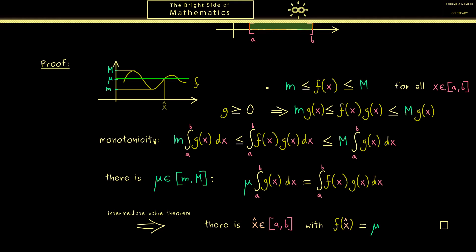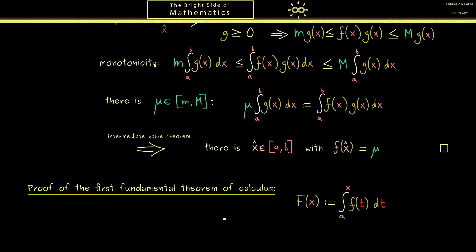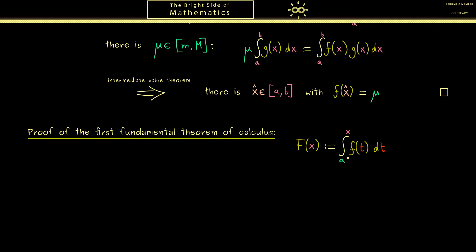With our first proof finished, we go to the first fundamental theorem of calculus — in fact this proof will be very quick. Recall the claim: for a continuous function f, the integral function capital F is an antiderivative. Therefore we have to show that capital F is differentiable and that its derivative is lowercase f. For a small number h we calculate F(x+h) minus F(x), then divide by h and send h to 0; if this limit exists, F is differentiable at x.